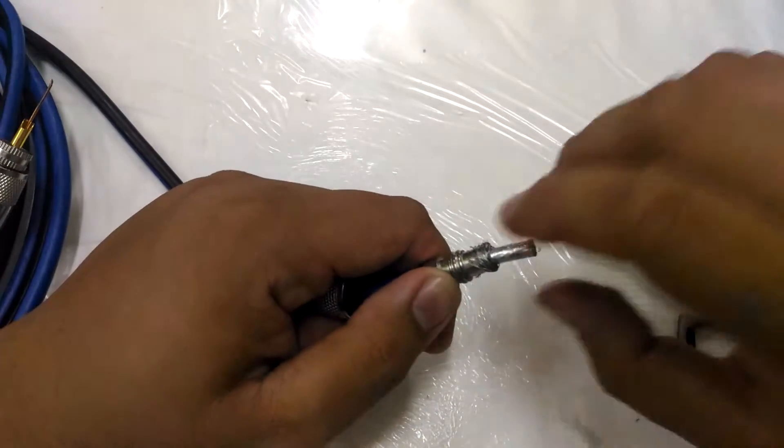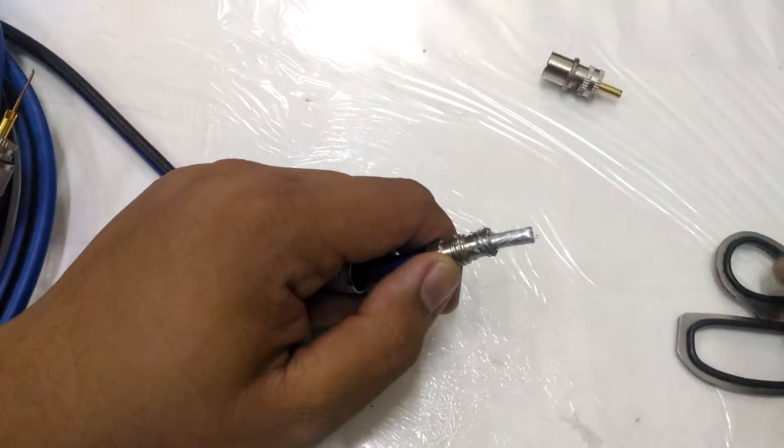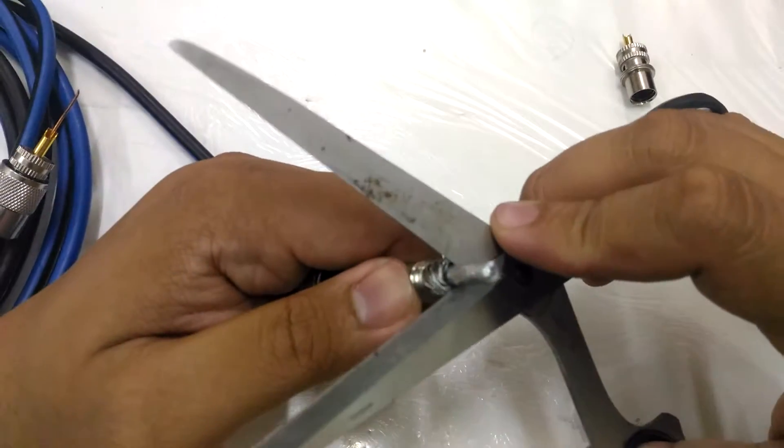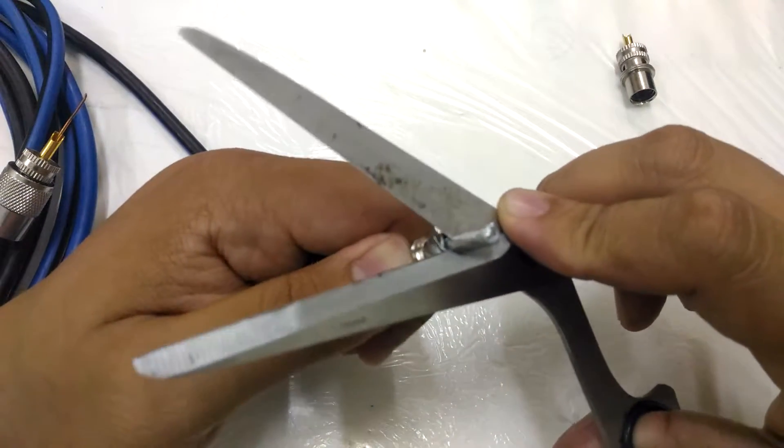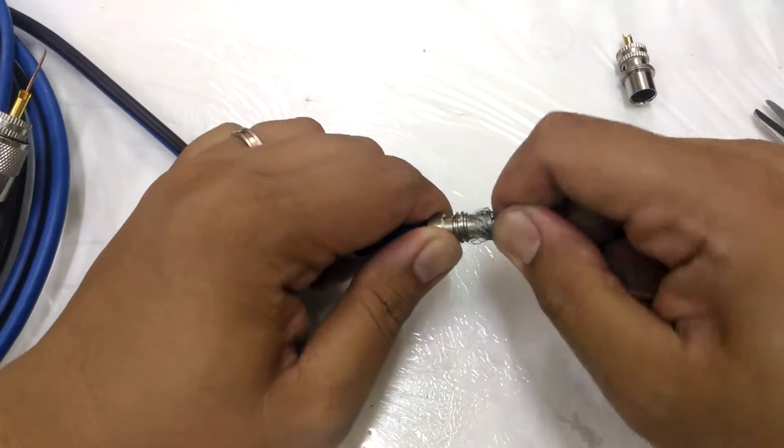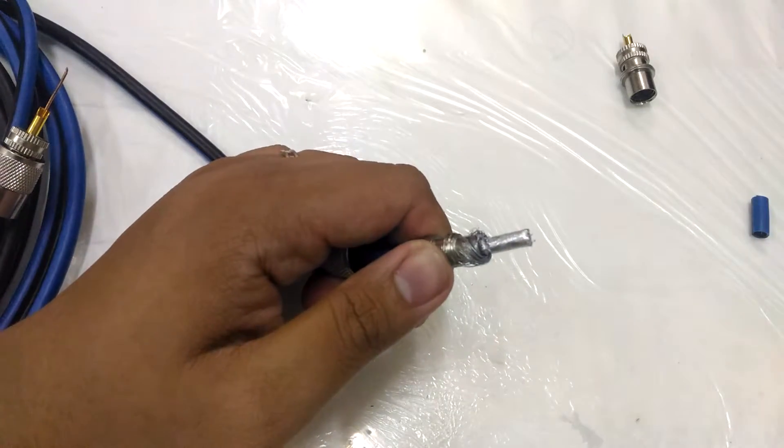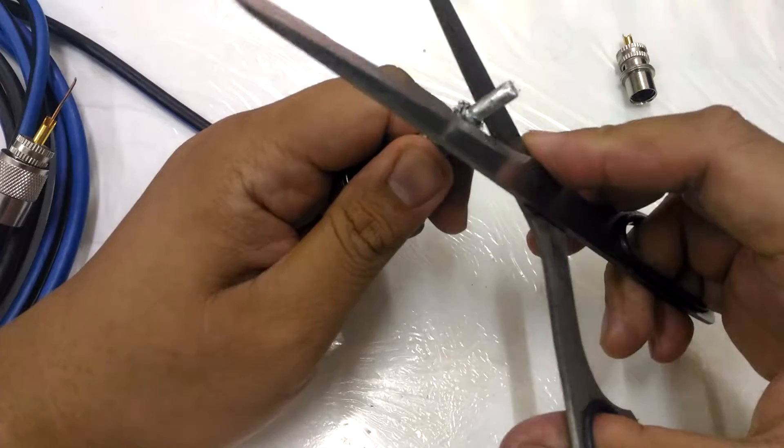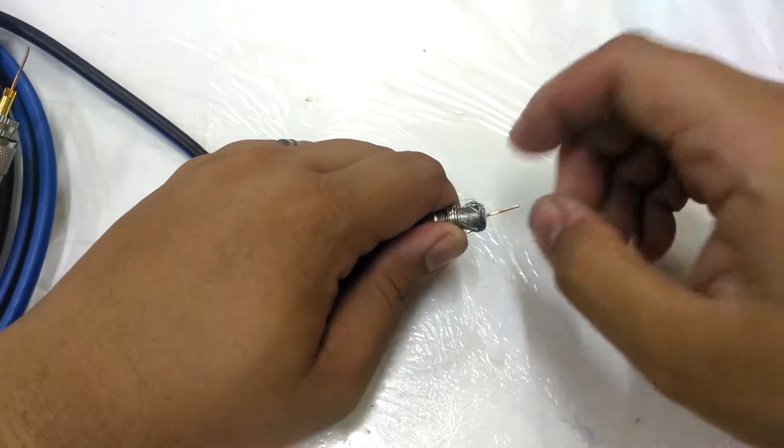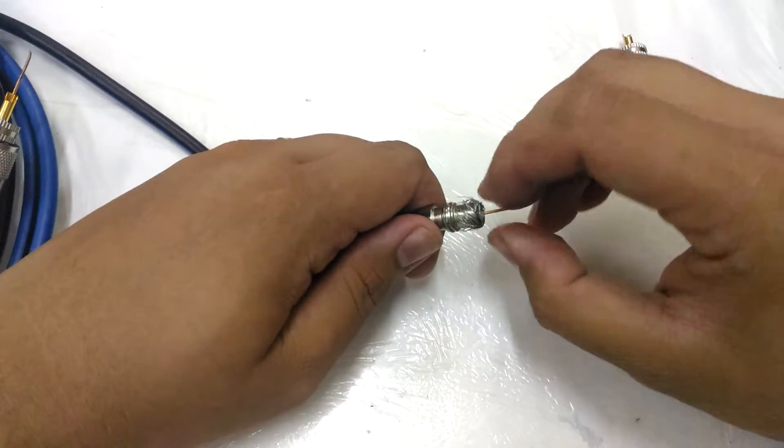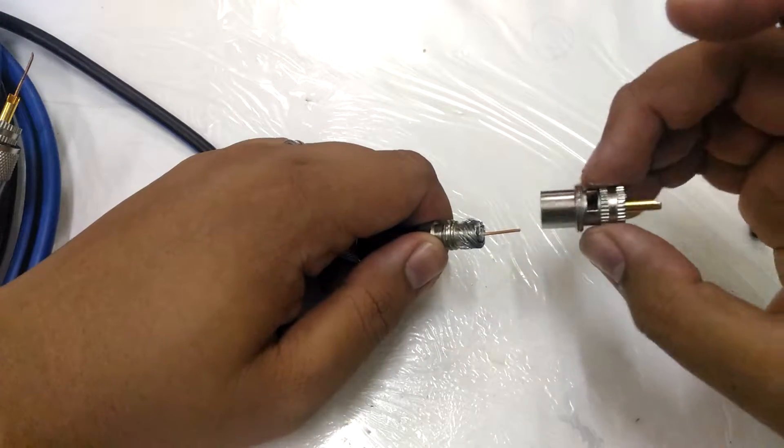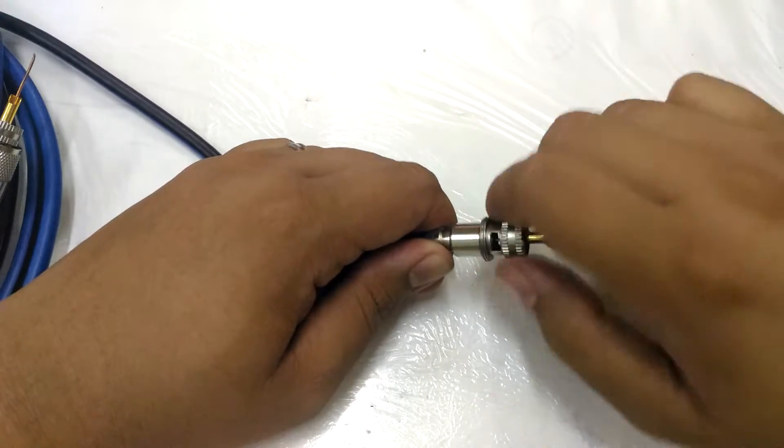Next is you are going to take off the insulation in this part, careful not to cut the center conductor of the coax. This is the braid, so just twist it.